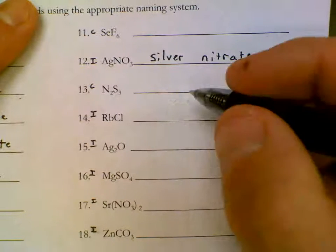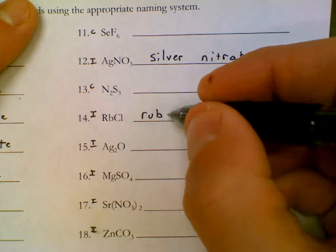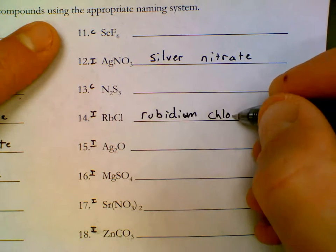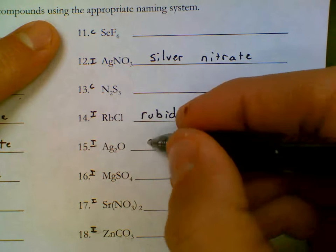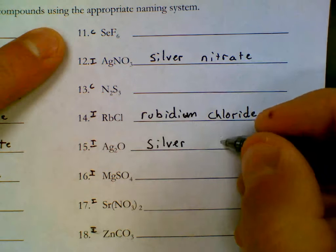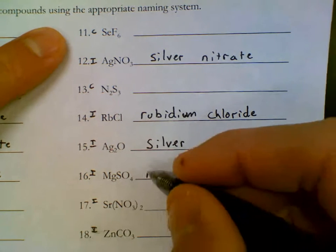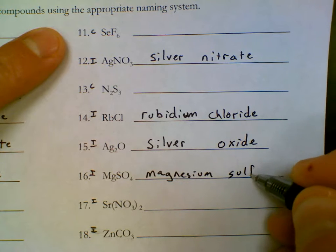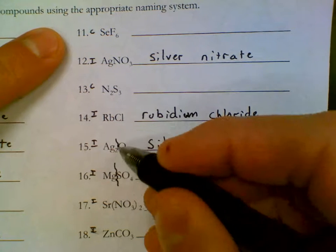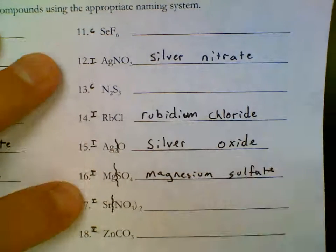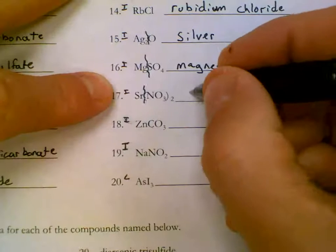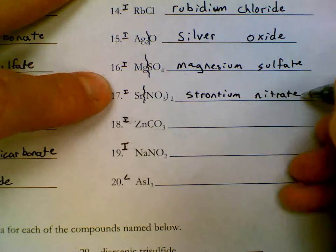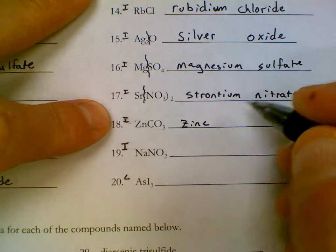Going to the right hand side of part one. Skip the covalent. Silver, AG is silver. Full name, NO3 is nitrate. ATE ending. Make sure the suffixes of these names are written clearly. Covalent skip. RB is rubidium. AG is silver. O is oxide. Mg is magnesium. SO4 is sulfate, polyatomic ion. SR is strontium. NO3 is nitrate. Zn is zinc. CO3 is carbonate.